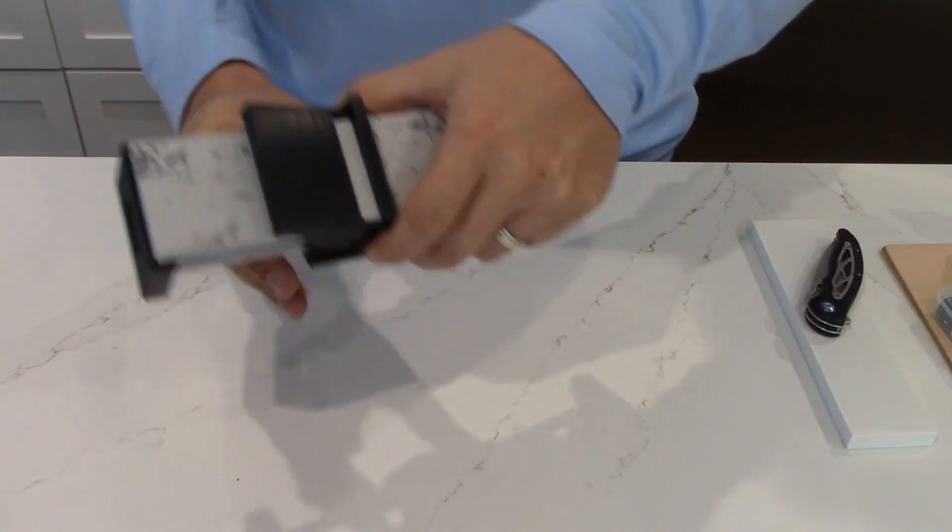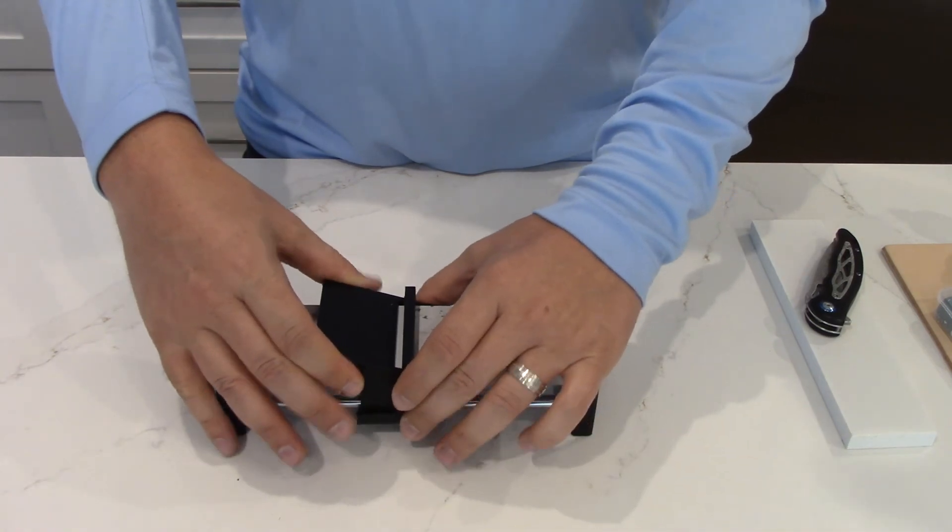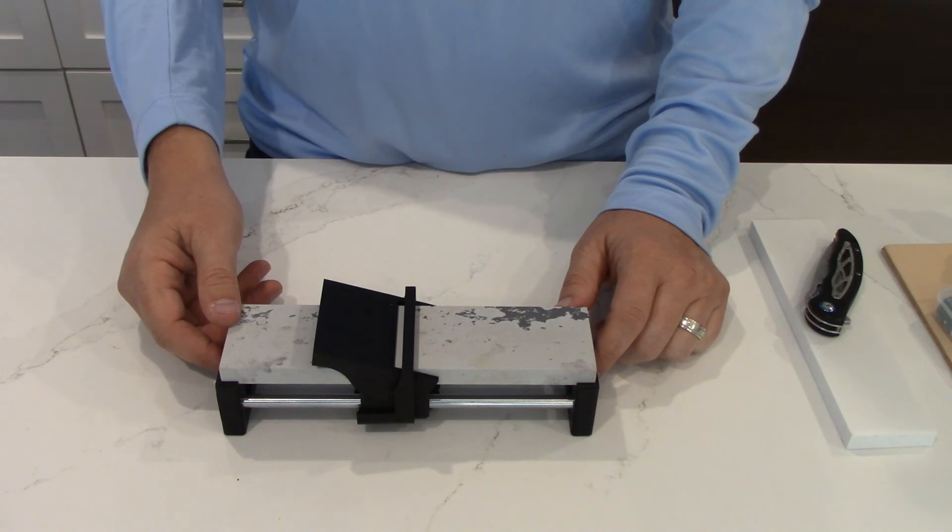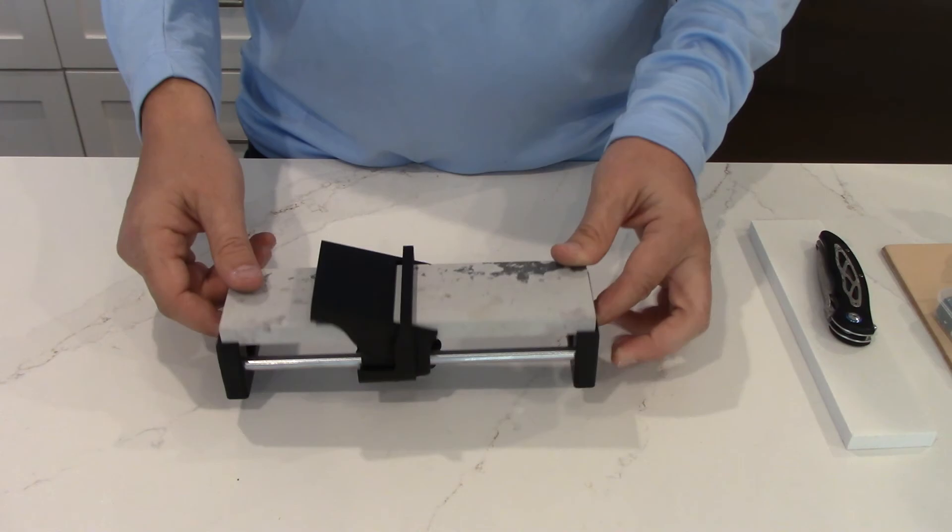So if you have a really thick blade, you can move it forward like that. Or if you have a thinner blade, you can move it back. And it will work with any of the angle settings. So that is the unboxing and just a brief demonstration of the sharpener.